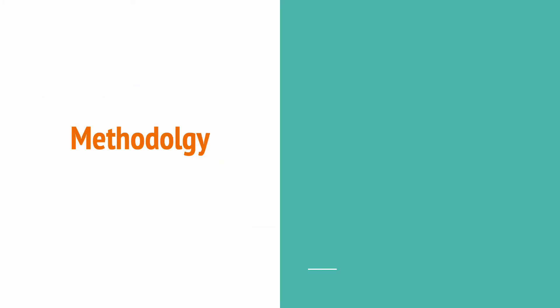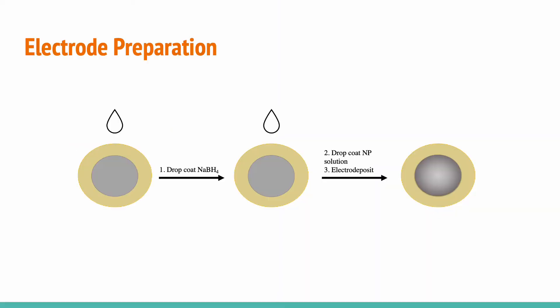Now that we have a bit of background, we will move on to the methodology. For our electrode preparations, we drop-coated the electrode with sodium perohydride, which is a strong reducing agent, in order to provide an anchor for the nanoparticle salt solutions. After we drop-coated the sodium perohydride, we proceeded to drop-coat the electrode with the nanoparticle salt solution, and then we electro-deposited — applying a voltage for a certain amount of time in order to cause the nanoparticles to grow on the electrode's surface.